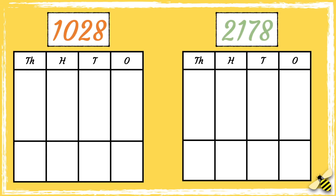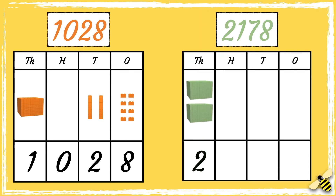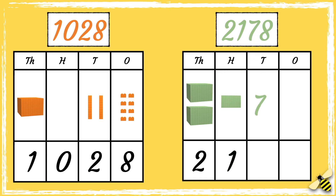Let's have a look at another example. Here are two numbers — which number is greater? The number 1028 has one thousand, it has zero hundreds, it has two tens and it has eight ones.